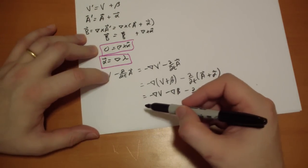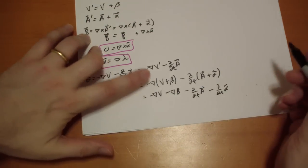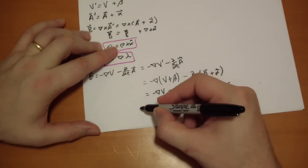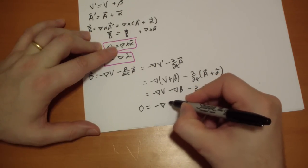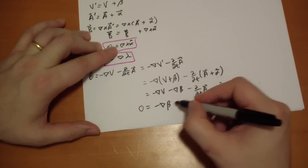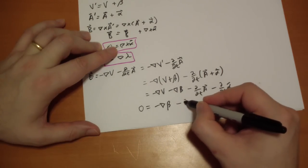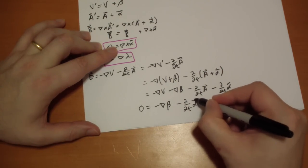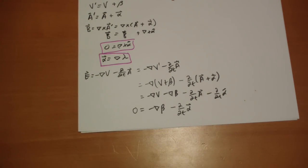So we get these terms cancel out. And so basically, zero has to equal the gradient of beta and the time derivative of alpha.